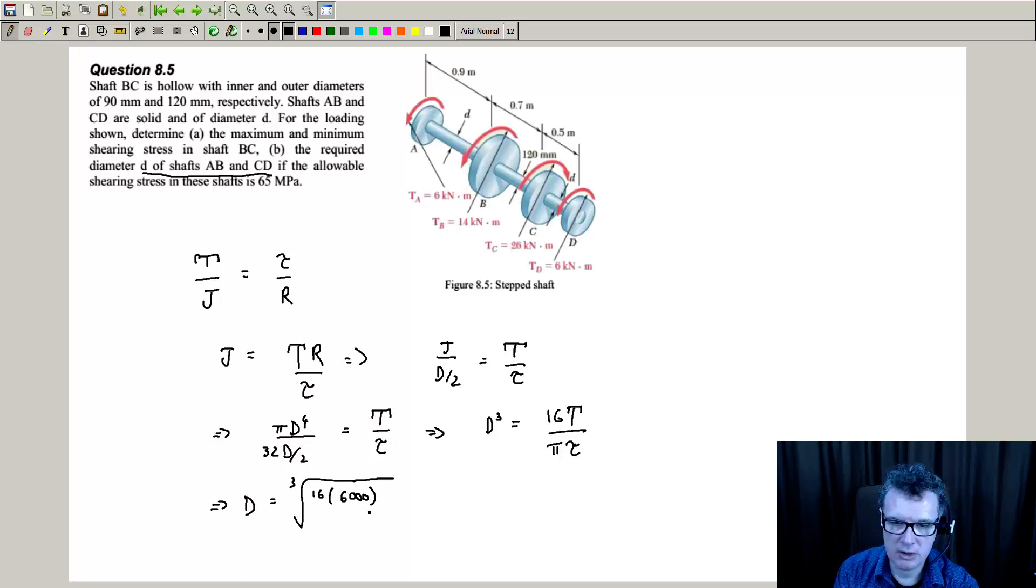I will work in SI units. So that's 6,000 divided by pi. And that is 65 times 10 to the 6. So 16 times 6,000 divided by pi divided by 65 times 10 to the 6. I'll take that to the power, check off the root on my calculator, so I'll use that. And press the root button, and I get 77.756 millimeters.